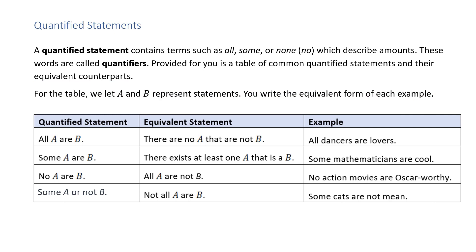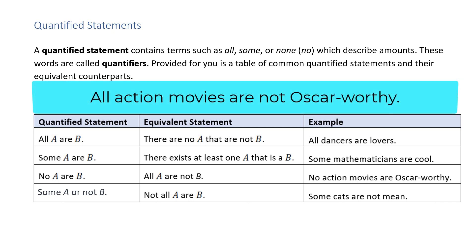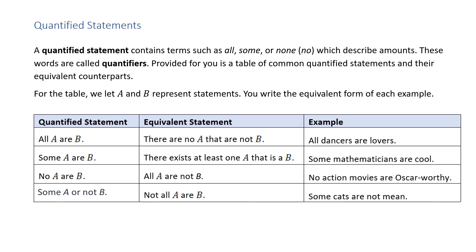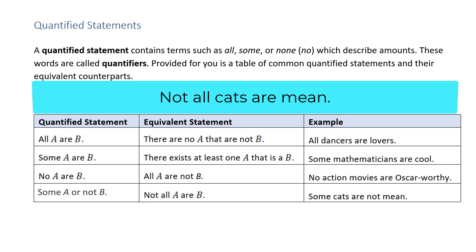Third, 'no A are B' — example: 'no action movies are Oscar worthy' — equivalent form: 'all A are not B,' i.e., 'all action movies are not Oscar worthy.' Finally, 'some A are not B' — example: 'some cats are not mean' — equivalent form: 'not all A are B,' i.e., 'not all cats are mean.'